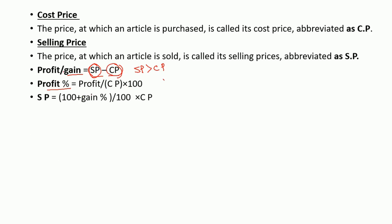If you want to calculate the selling price from profit, the formula is 100 plus the gain percentage, divided by 100, into the cost price. While if you want to calculate the cost price from the profit, you do the opposite: 100 divided by 100 plus the percentage gain, into the selling price. Remember, whatever selling price you sell a material at should be higher than the cost price to get a gain.